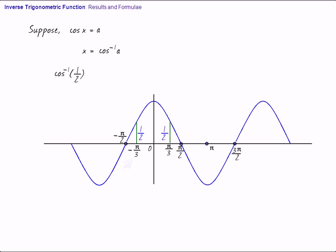So, cos inverse half is a value between 0 to pi by 2 only. Or, in general, you can say cos inverse any positive number between 0 and 1 belongs to 0 to pi by 2.